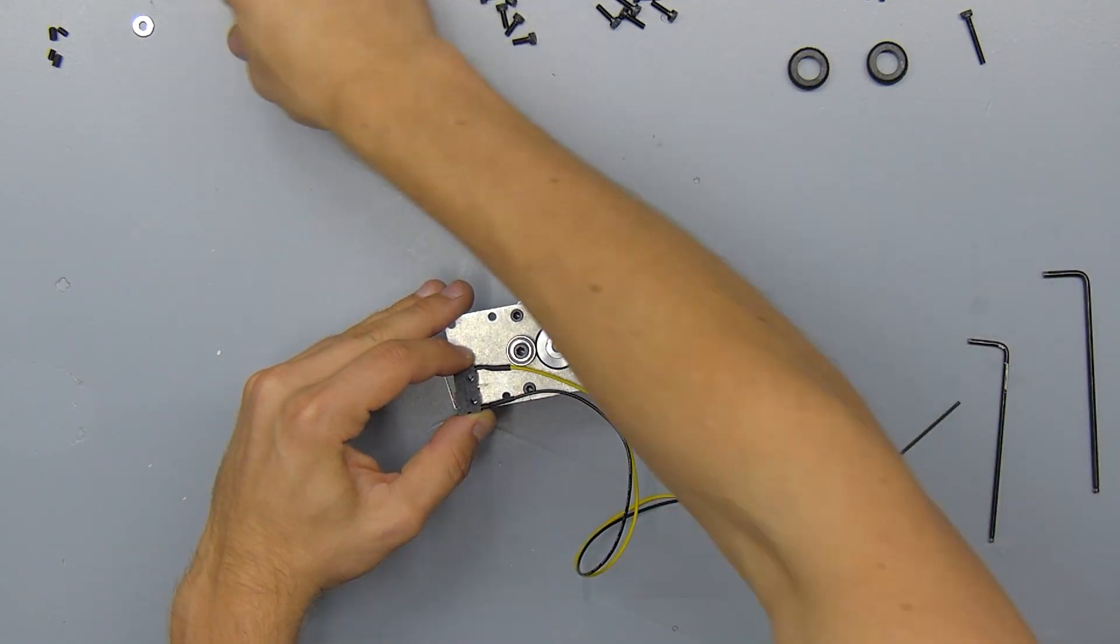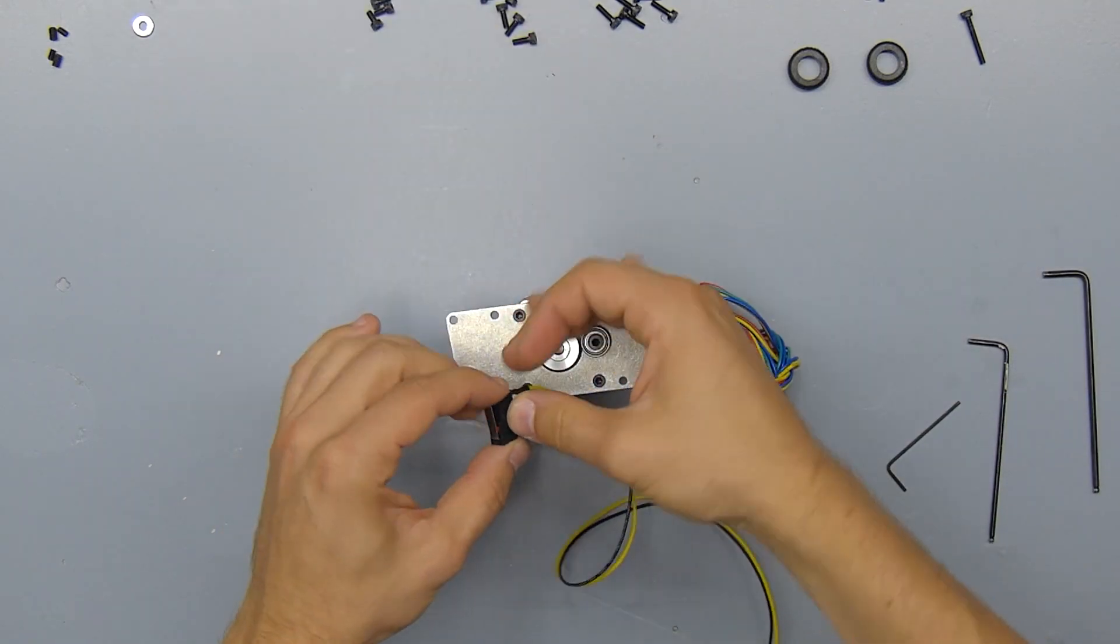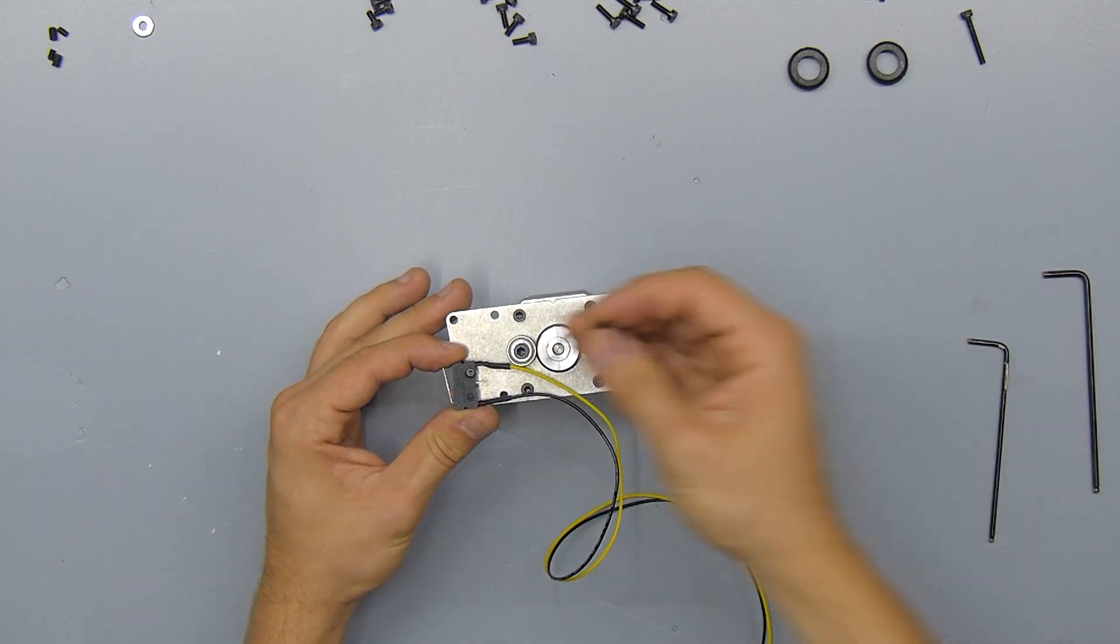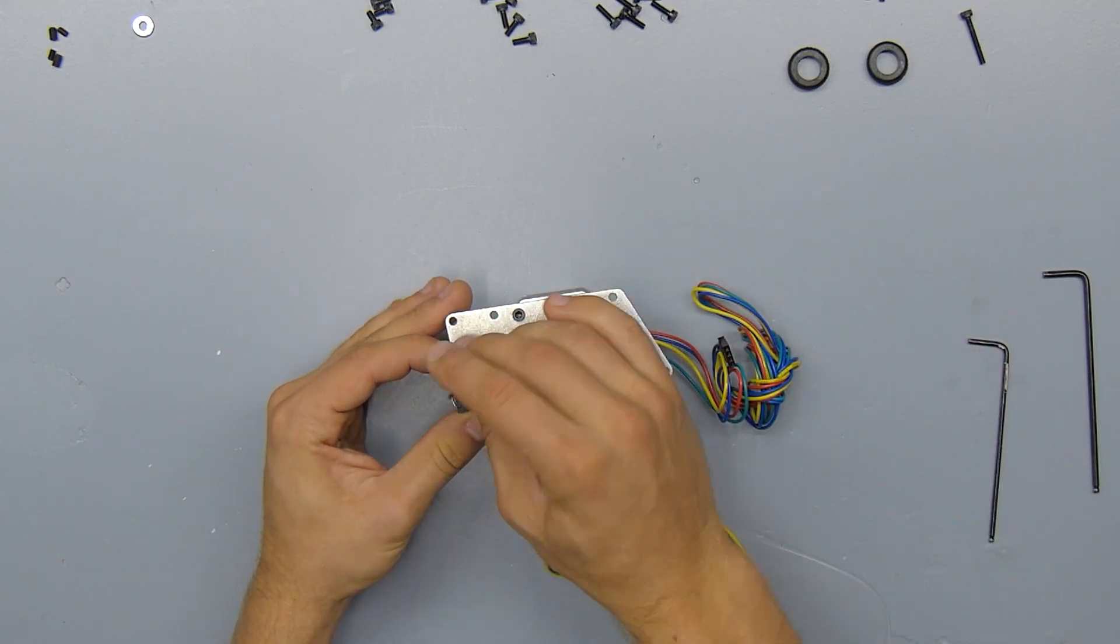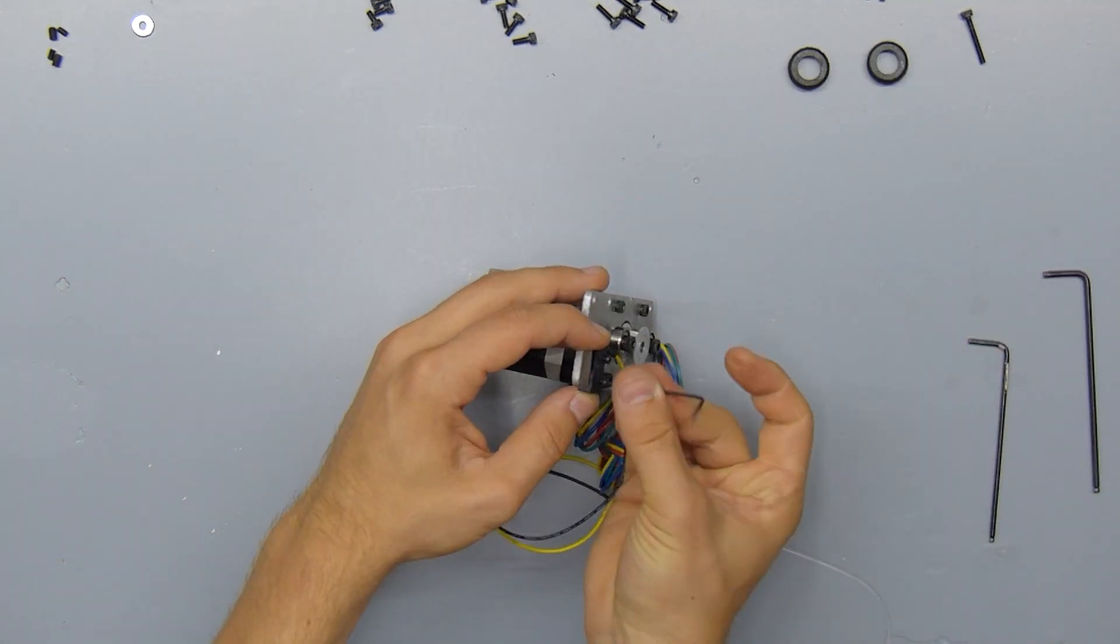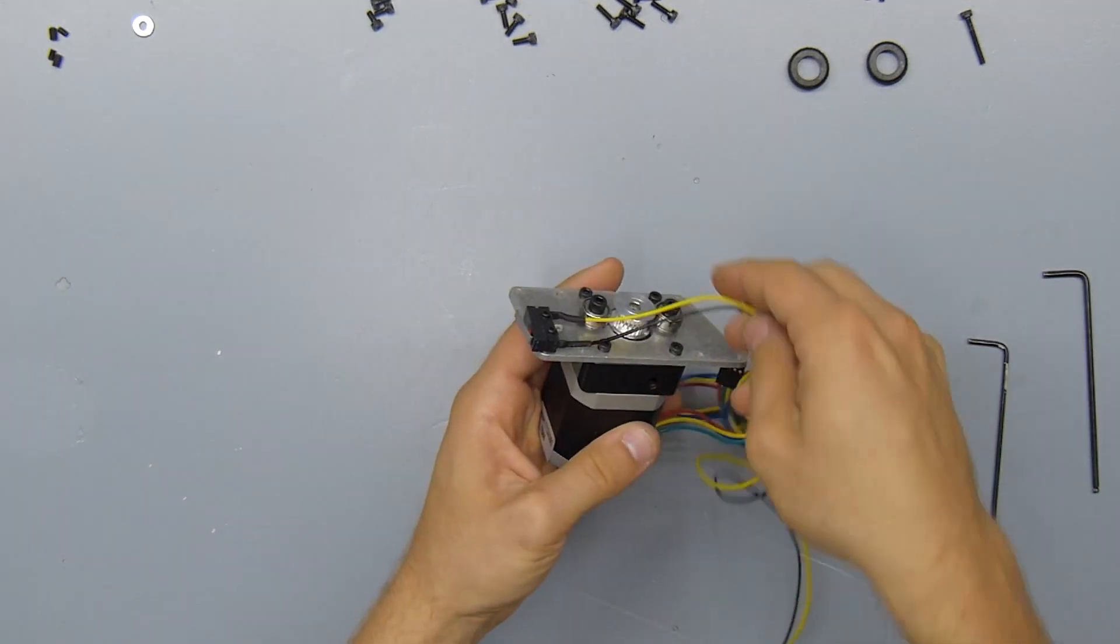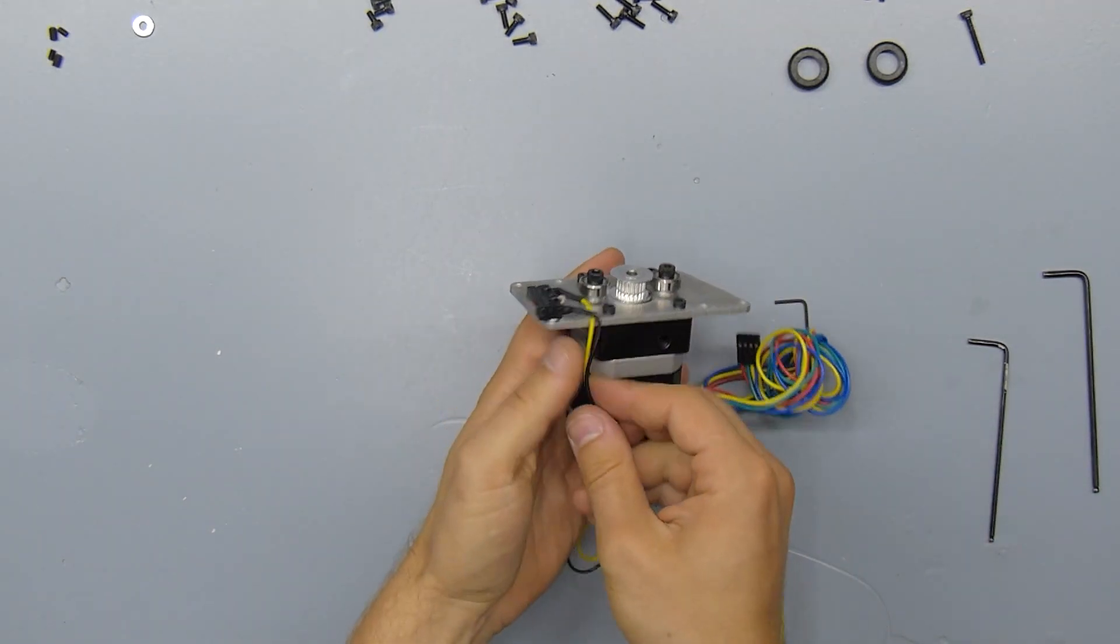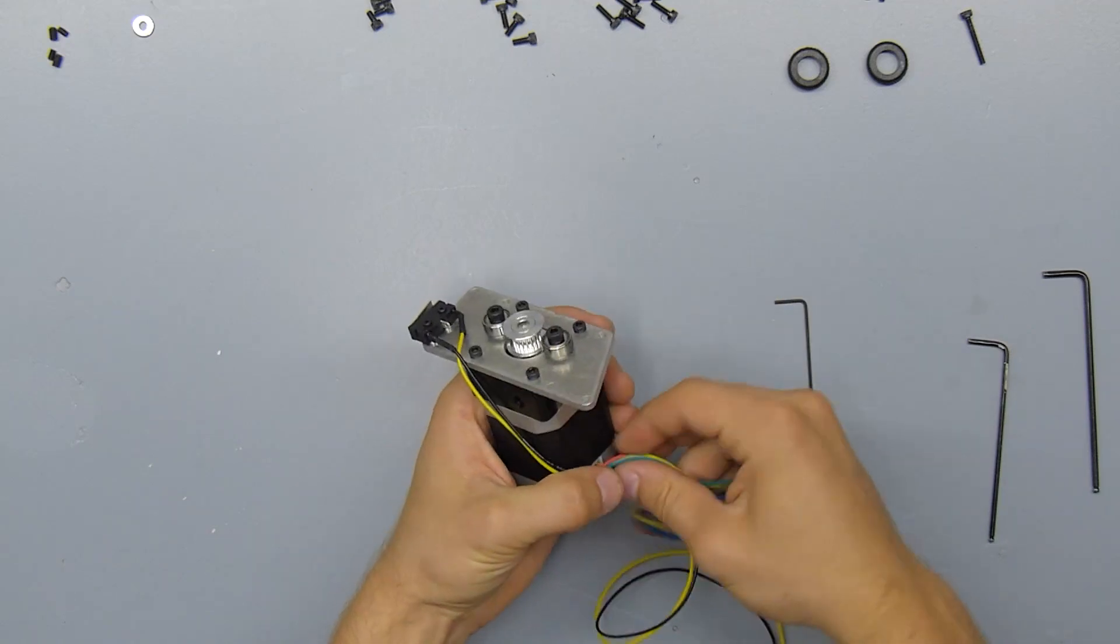Next up we'll install the endstop for the y-axis. Watch the orientation of the lever and then install the endstop with the two remaining M2 screws. We're also going to tuck away the cable off the endstop and route it away from the bore in the z-nut.